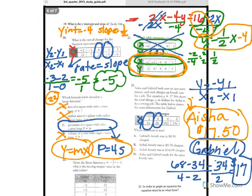So it says, which statement is true? Gabriel's hourly rate is 50 cents cheaper. Which, that is true. He is at 17 and she is at 1750. So he is 50 cents cheaper than she is.